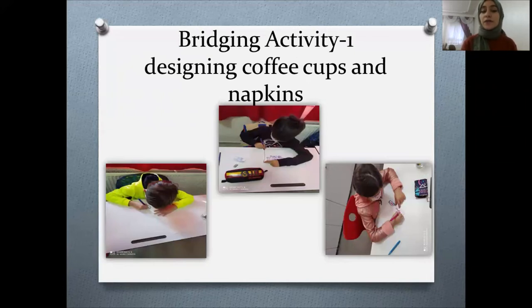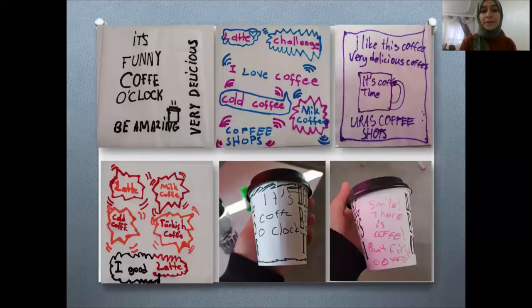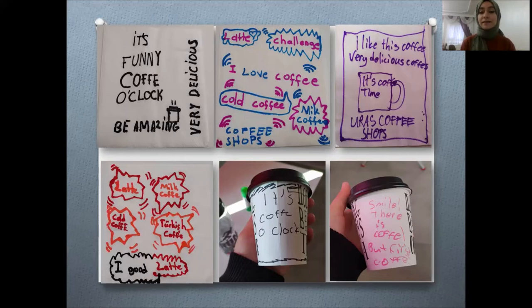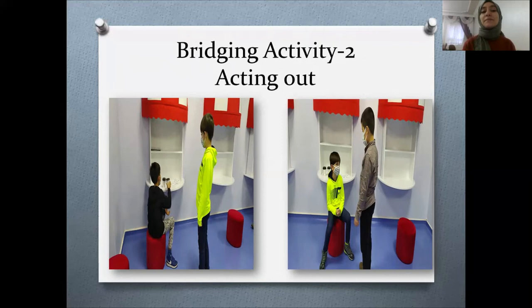At the end of this lesson we had two bridging activities. Bridging activity one was about designing coffee cups and napkins — I asked my students how they would design their cups and napkins if they owned a coffee shop. You can see some of their works: 'it is funny o'clock,' 'be amazing,' 'very delicious.' One student wrote the types of coffees on the napkins. They were so creative. Bridging activity two was acting out: one student was the coffee shop owner and the other was the customer, and they role-played using the cups and napkins they designed.